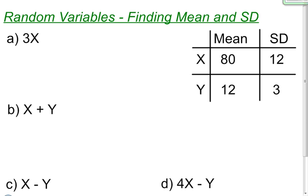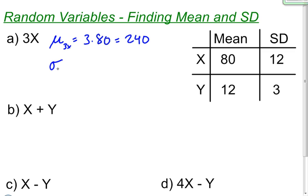If I wanted to triple the values of my random variable x, what's going to happen and how can I find my new mean and new standard deviation? Well this is pretty straightforward. The mean is affected by the multiplication of a constant, so the mean of 3 times random variable x is just 3 times the mean, or 3 times 80, which is 240. The new standard deviation is also just that constant times the original standard deviation of 12, which gives a new standard deviation of 36.